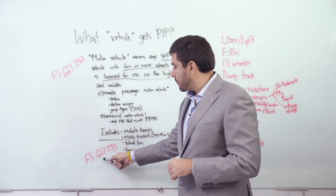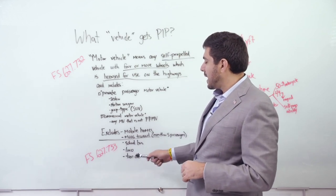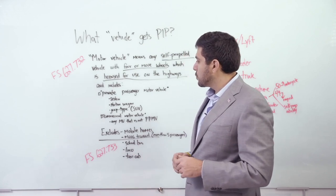A commercial motor vehicle, they defined it as anything that's not a private passenger vehicle. So if it's self-propelled, has four or more wheels, is licensed for use on the highways, then it is covered under PIP.